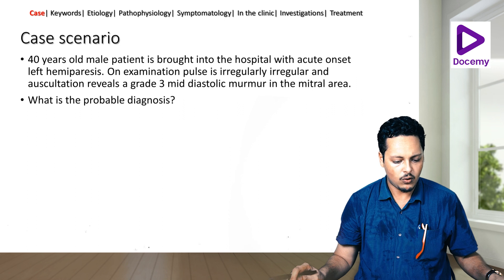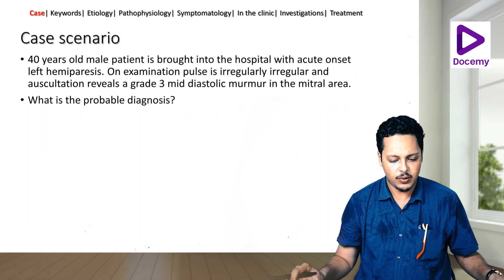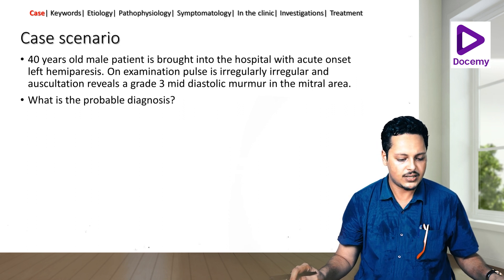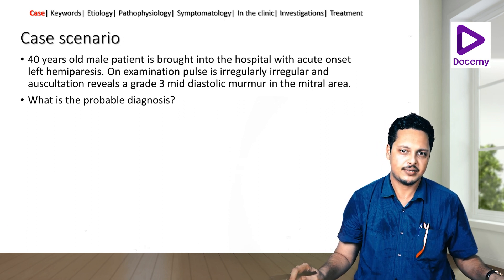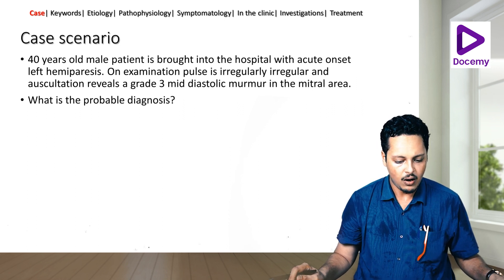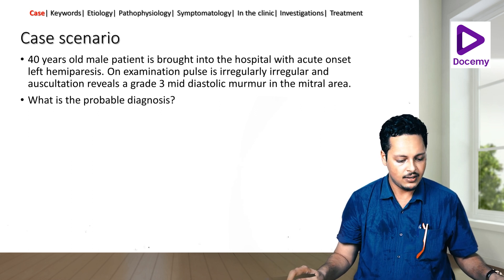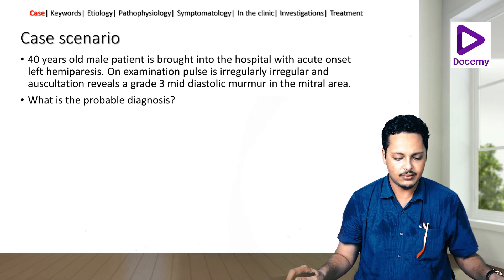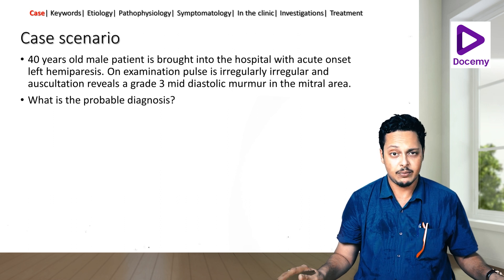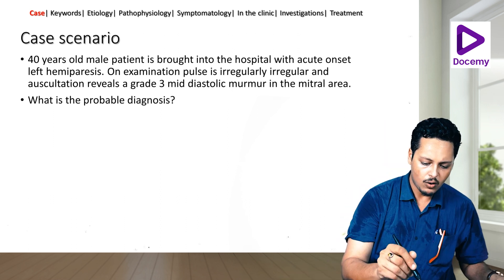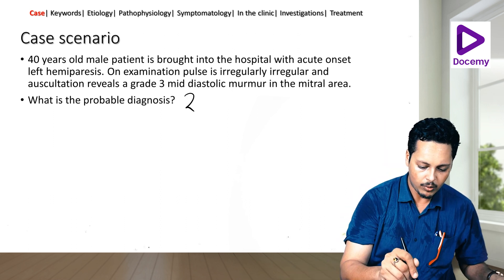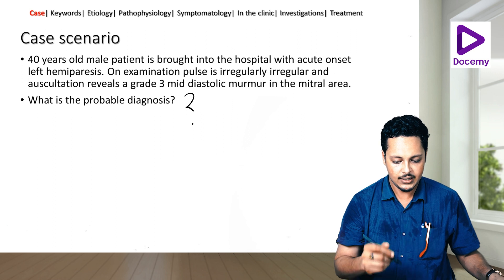Let's start with the case scenario. A 40-year-old male patient is brought into the hospital with acute onset left hemiparesis. On examination, the pulse is irregularly irregular and auscultation reveals a grade 3 mid-diastolic murmur in the mitral area. What is the probable diagnosis?